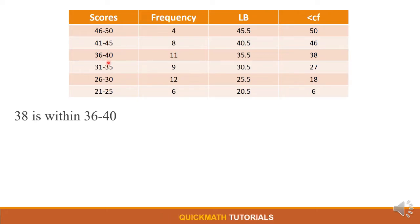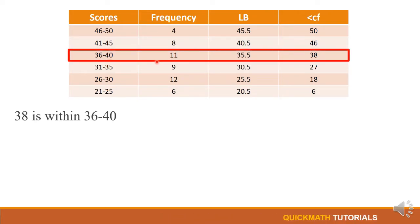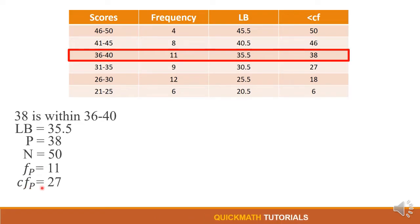Next let's identify our LB which is equal to 35.5, and our P or our raw score is 38, and our N is 50. We got 50 because the total of this frequency is equal to 50, or we can see it here. And our frequency, so here we have 11, and our cumulative frequency we will get 27.